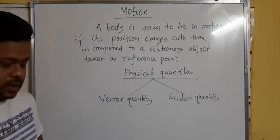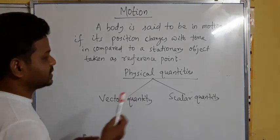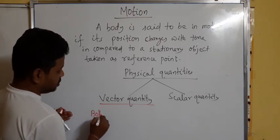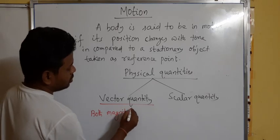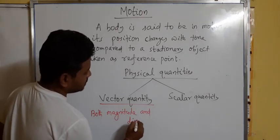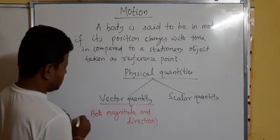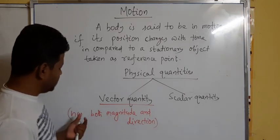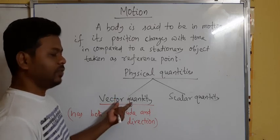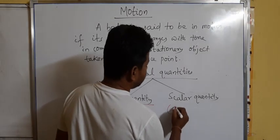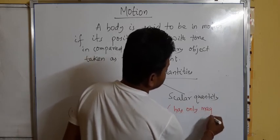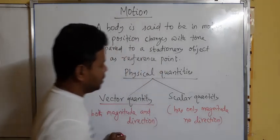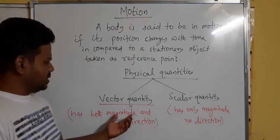What is the difference between vector and scalar quantity? A physical quantity which has both magnitude and direction is called a vector quantity. But a scalar quantity has only magnitude — no direction. Then the question is: what is magnitude and what is direction? I will explain with an example.